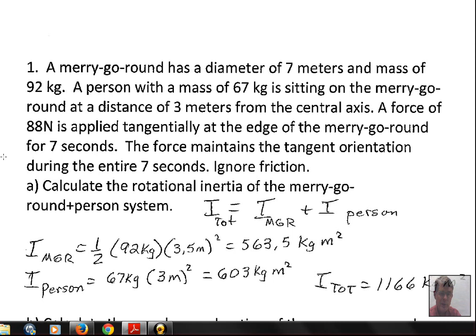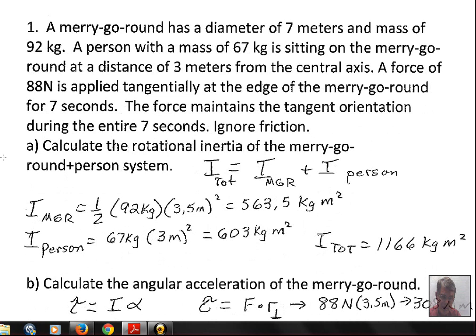You should check the calculations: ½ times 92 kg times (3.5 m)². The person is a point object for our calculation. The person is 3 meters from the axis, so we use I = MR² for a single mass. Adding those two numbers together, we get I_tot = 1166 kg·m² as the total rotational inertia.